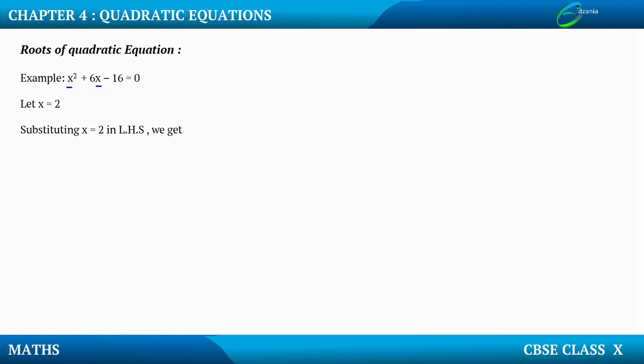So we will get 2² + 6(2) - 16. 2² is 4 and 6(2) is 12. 4 + 12 - 16. 4 + 12 is 16 - 16, that is going to give me 0. So yes,